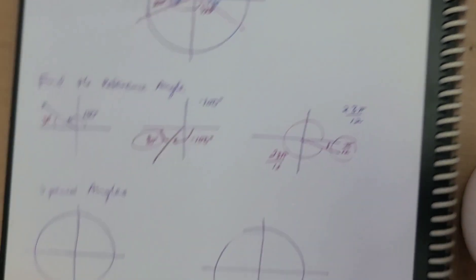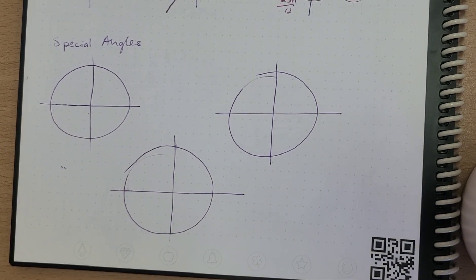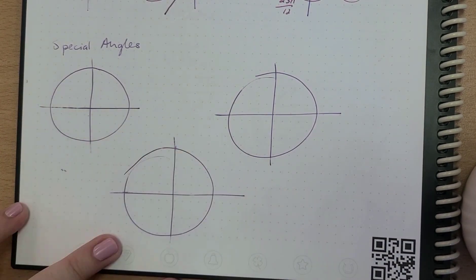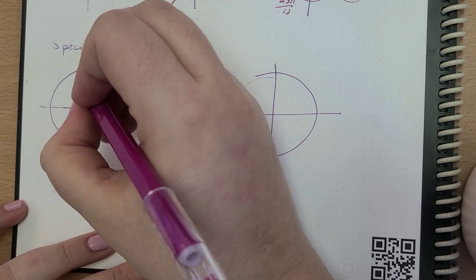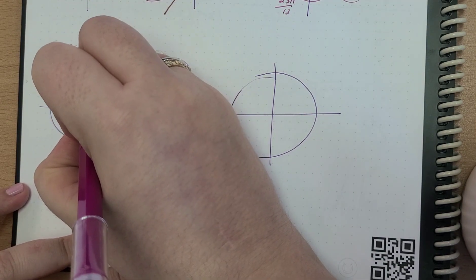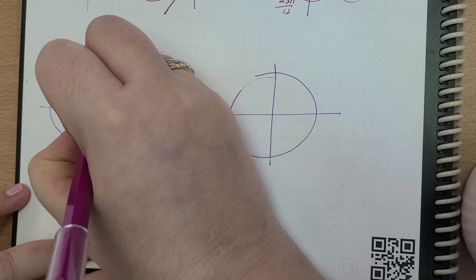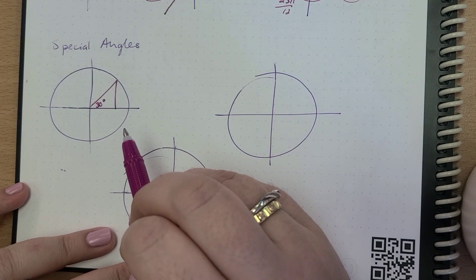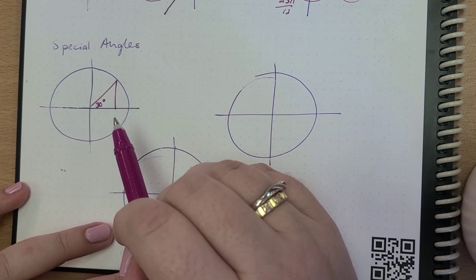Let's talk about some special angles. So here we have a triangle. If we draw a reference triangle and let's say this angle is 30 degrees.